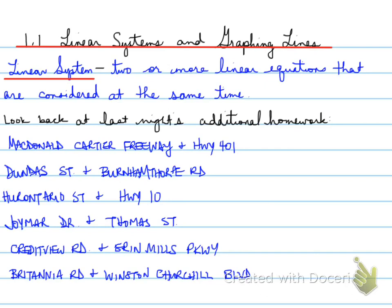Looking at these examples, let's look at the one that's closest by the school, Joymar and Thomas Street. What is the connection that Joymar Drive and Thomas Street have with each other? Well, if you know, you should know that Joymar Drive and Thomas Street actually intersect. They intersect at one time. Another pair that does the exact same thing is Britannia Road and Winston Churchill Boulevard. Those two intersect once. So you have two pairs of streets that intersect once.